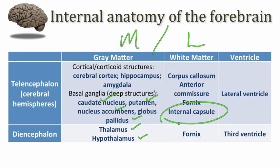To complete the picture, we can consider the placement of some additional white matter structures such as the commissures of the forebrain — the corpus callosum and the anterior commissure — and we'll see how the fornix fits in. I also want you to appreciate how the ventricles associated with the forebrain, the lateral ventricle and the third ventricle, are arranged relative to the deep gray matter and the internal capsule.